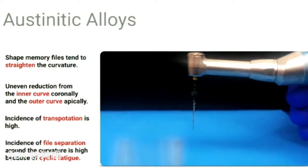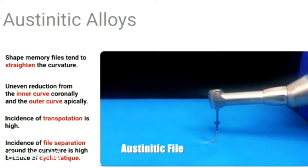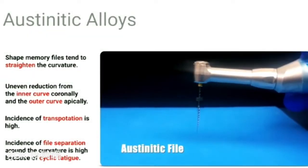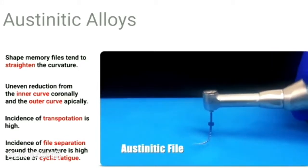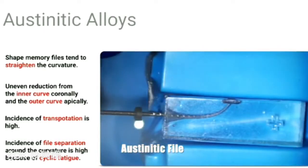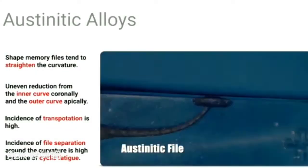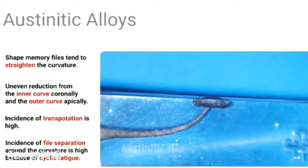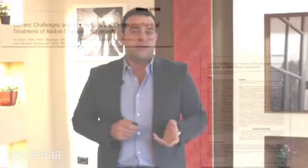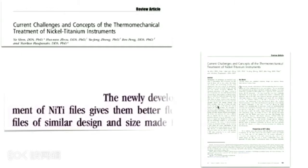The problem with this file is that it is austenitic in nature, meaning the file has a shape memory and needs to regain its original shape, as we can see with the file bending and regaining its shape. Using this file inside the canal will cause uneven reduction — it will remove dentin from the inner curve coronally and the outer curve apically — and will aid in canal transportation.